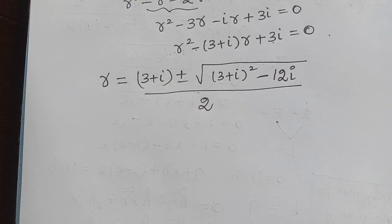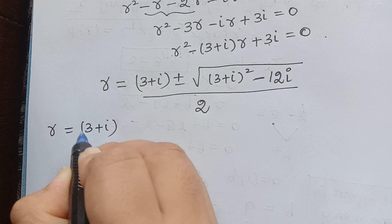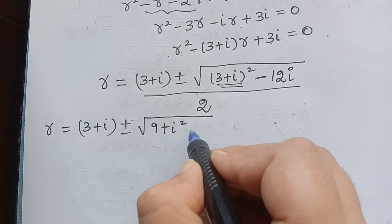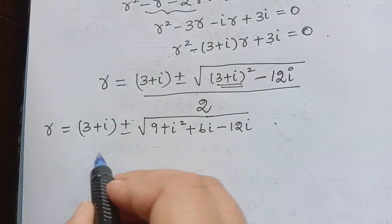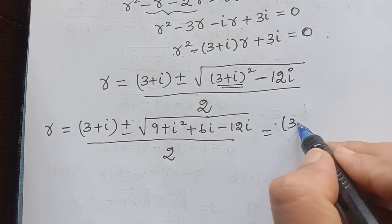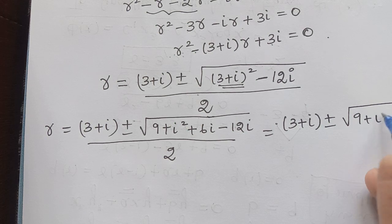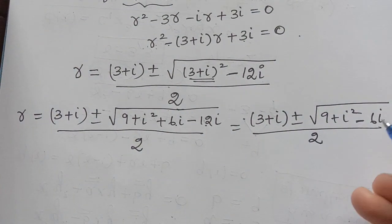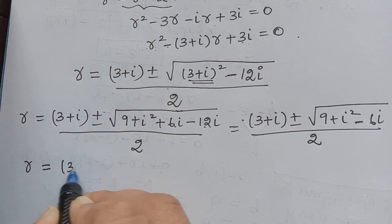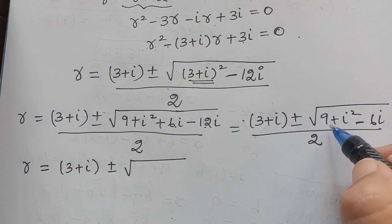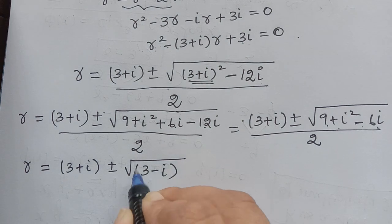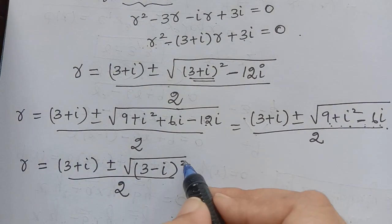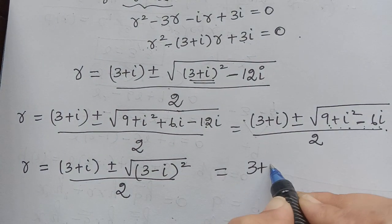So r equals (3 plus i) plus or minus square root of, expanding (3 plus i) squared using the (a plus b) squared formula: 9 plus i squared plus 6i, minus 12i, divided by 2. This simplifies to (3 plus i) plus or minus square root of 9 plus i squared minus 6i, all divided by 2. Now 9 plus i squared minus 6i can be recognized as (3 minus i) squared, since it matches the pattern a squared minus 2ab plus b squared.